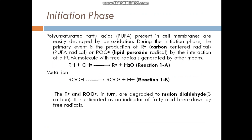Here, RH is a PUFA, and the hydroxyl radical attacks the PUFA to produce carbon-centred radicals and water. In the presence of metal ions, the fatty acid is converted into lipid peroxide radicals. Lipid peroxide radicals and carbon-centred radicals are in turn degraded to malondialdehyde, a three-carbon compound. It is estimated as an indicator of fatty acid breakdown by free radicals.